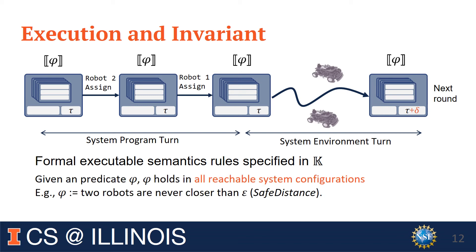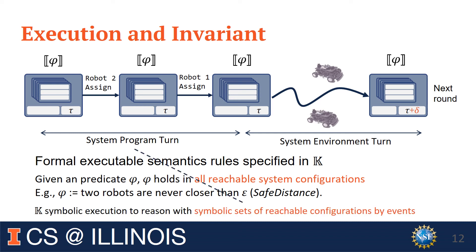To ensure certain safety properties — for example, that no two robots collide in the delivery application — we specify a predicate phi that any two robots are never too close, and we want this predicate to hold for all reachable configurations in each round, proving it to be an invariant of the system. Following our semantics, we can decompose the reasoning for invariants over configurations in a round into reasoning with configurations in program turns and environment turns separately. In program turns, we use symbolic execution provided by the K framework to reason with each statement in each of the event transitions.